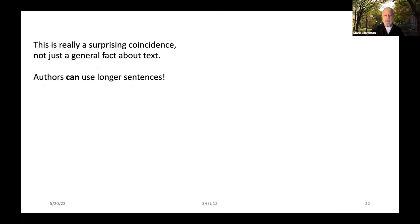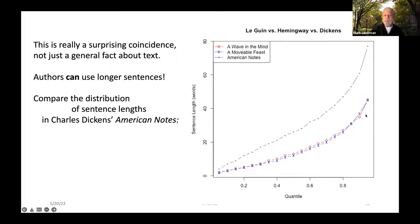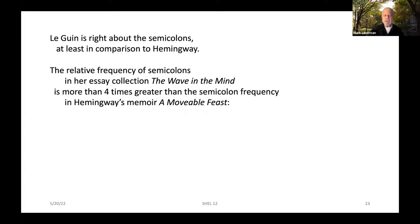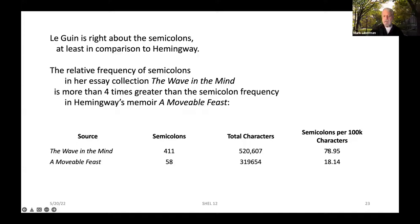This is really a surprising coincidence, but it's not just a general fact about texts — authors can obviously use longer sentences. Here's the distribution of sentence lengths in Charles Dickens' 'American Notes,' also a sort of memoir-like piece of writing, and you can see that the mean, the median, and indeed the whole distribution tend toward longer sentences. Now, Le Guin was right about the semicolons, at least in comparison to Hemingway. The relative frequency of semicolons in her essay collection 'The Wave in the Mind' is more than four times greater than the semicolon frequency in Hemingway's memoir 'A Movable Feast' — about 79 semicolons per 100,000 characters versus Hemingway's approximately 18.